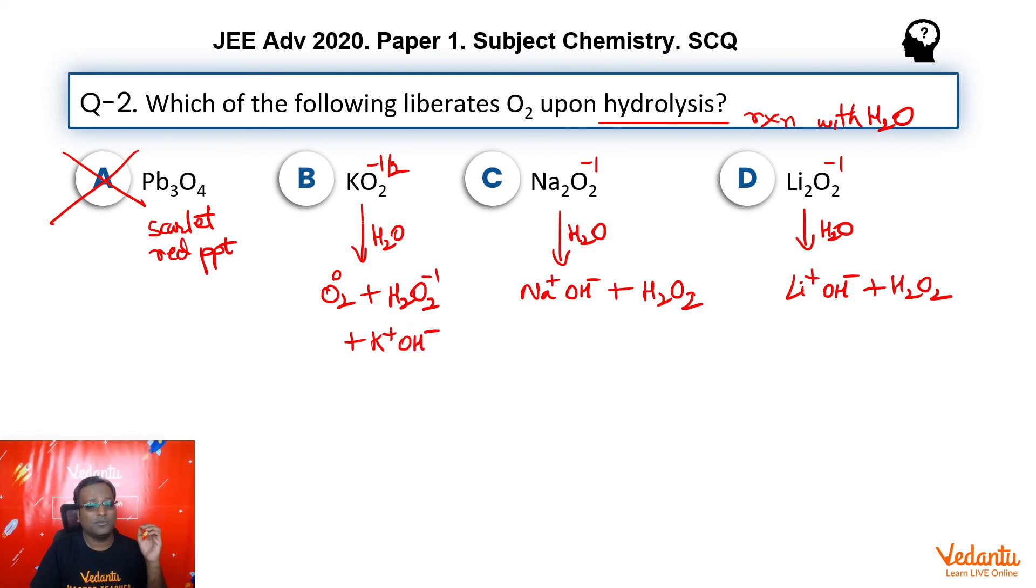That is the reason why superoxide being dissolved in water, it produces O2 as well as H2O2.